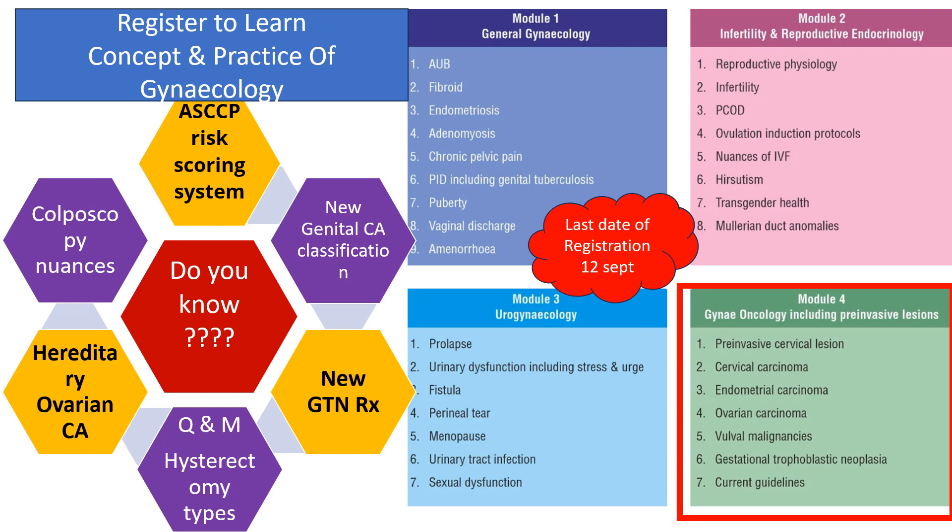The last module to be covered is Gynae-Oncology, including pre-invasive lesions. If you want to learn the ASACP risk scoring system, new genital carcinoma classification, new GTN management, understand the Curlum-Oro classification of hysterectomy and its intricacies, hereditary ovarian carcinoma, colposcopy nuances, and all the pre-invasive lesions — please join earliest and register to learn the concept and practice of gynecology.